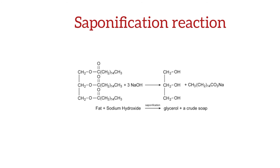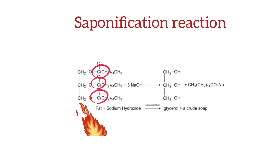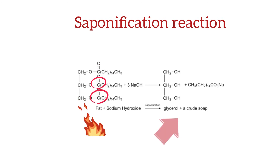Triglycerides undergo a saponification reaction, which is a type of organic reaction between an acidic ester and a strong base to produce fatty acid salt. This reaction has the same function as hydrolysis. In this reaction, triglycerides involve boiling the animal fat or plant oil with excess aqueous sodium hydroxide, which breaks the three ester linkages in the triglyceride molecule. As a result, it produces a glycerol molecule and three fatty acid salts.